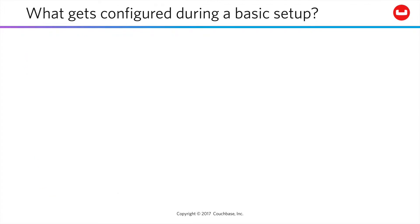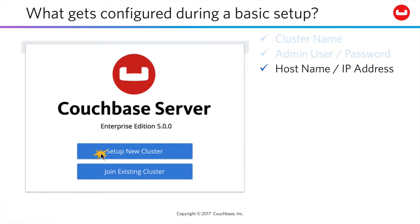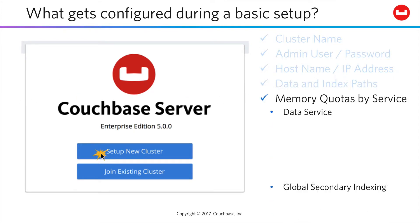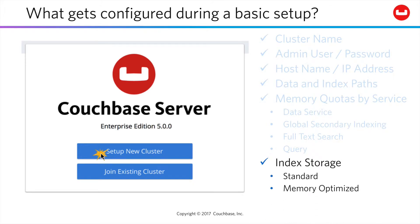During a basic setup of Couchbase, you're going to run the Setup New Cluster Wizard. You'll provide a name for your cluster, along with an administrative username and password, a hostname and IP address, paths to your data and index files, memory quotas by service — data, global secondary indexing, full text search, and query — and last, how you want your indexes stored: either standard, which relies partially on the file system, or memory optimized, which ensures your indexes remain in memory for updating.